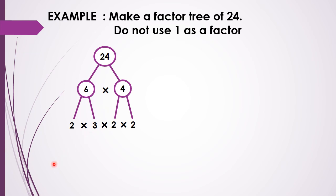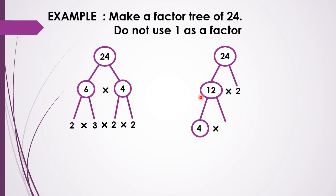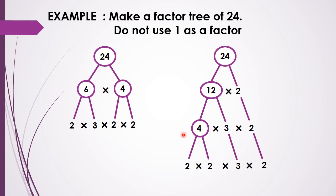Let us build the factor tree of 24 in another way using other factors. 24 can be written as 12 times 2. 12 is circled, so 12 can be further broken up as 3 times 4, and 2 is brought down as it is. Then 4 is circled and broken up as 2 times 2, while 3 and 2 are brought down. The last row of both factor trees is the same — these are the two ways of making factor trees for 24.